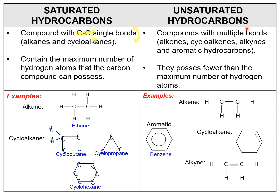Next is about unsaturated hydrocarbons. Unsaturated hydrocarbons are organic compounds whose carbon-carbon bonds have more than one bond — they have multiple bonds. Examples include alkenes, cycloalkenes (which are cyclic structures containing a double bond), alkynes (which have a triple bond), and aromatic hydrocarbons, which contain a benzene ring.